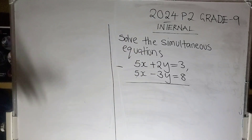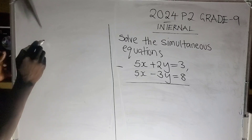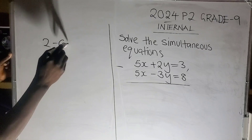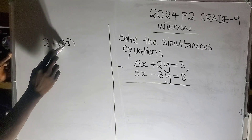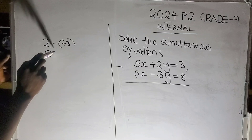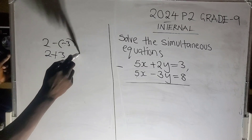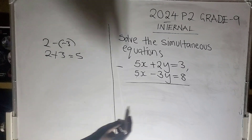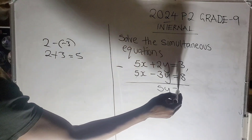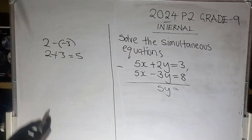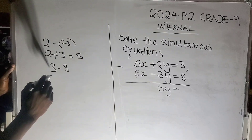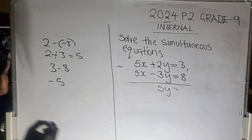Now what is 2 minus negative 3? Negative negative is positive, so we have 2 plus 3, which is positive 5. So here you have 5y is equal to — now what is 3 minus 8? 3 minus 8 is negative 5.